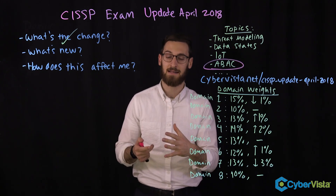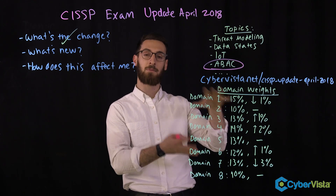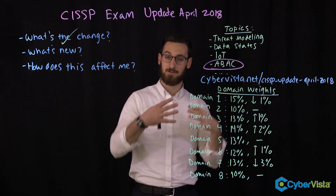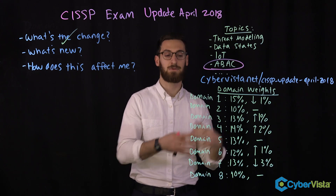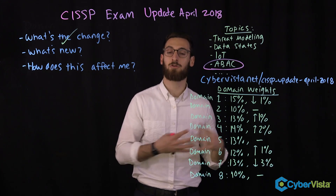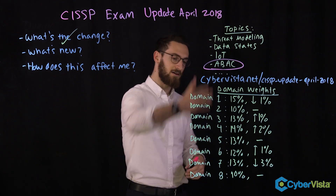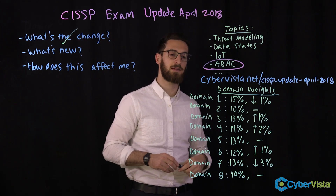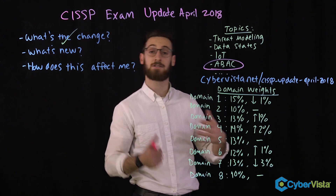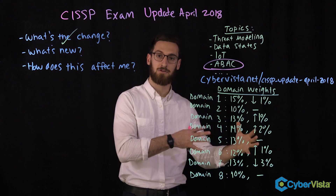Not only is there new content, but something else new is the updated domain weights. There are eight domains on the CISSP exam and they will actually tell you what percent of questions comes from each domain. Here is the list with the updated domain weights, and this column right here has the percent change from the old exam outline to this new exam outline.